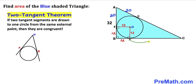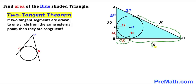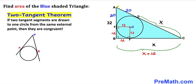Now let's focus on line segment FC. Let's call this side length X units. According to the two tangent theorem, line segment CD is going to be X units as well. We know BF is 12 and FC is X, so total length BC is X plus 12 units. Likewise, AD is 20 and CD is X, so whole side length AC is X plus 20 units.